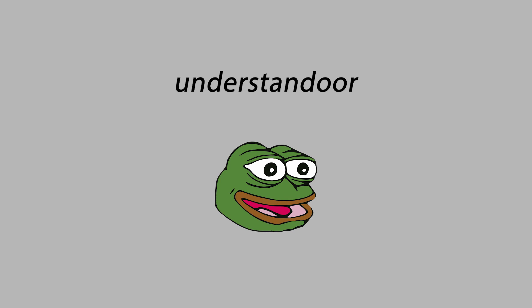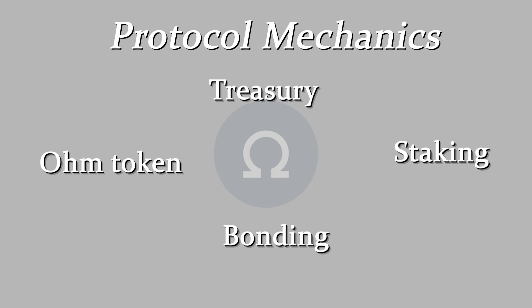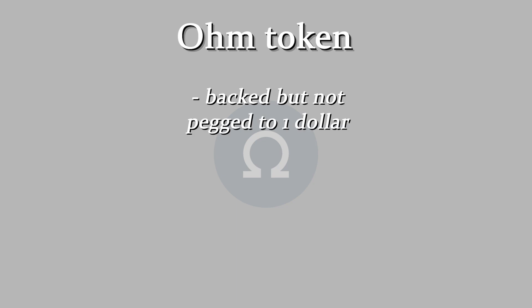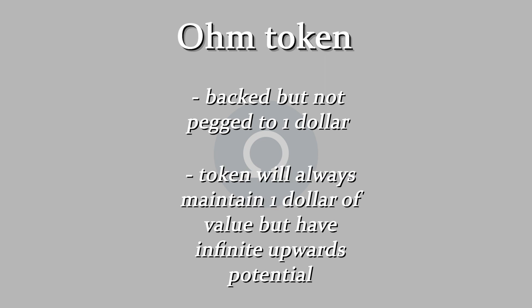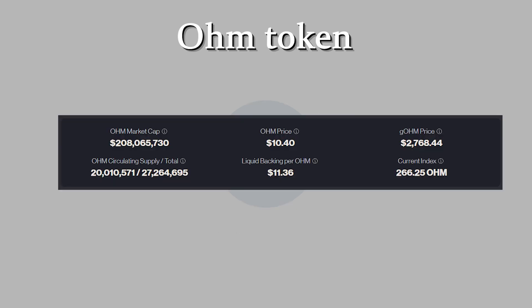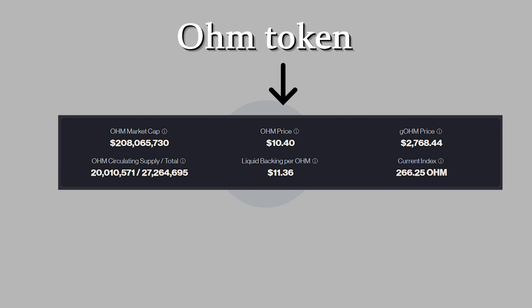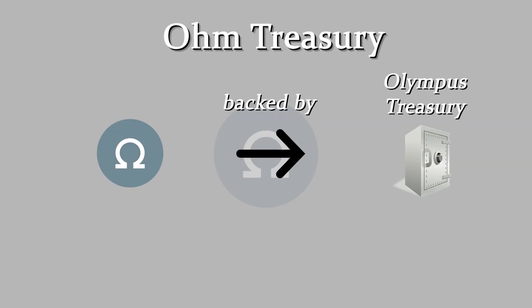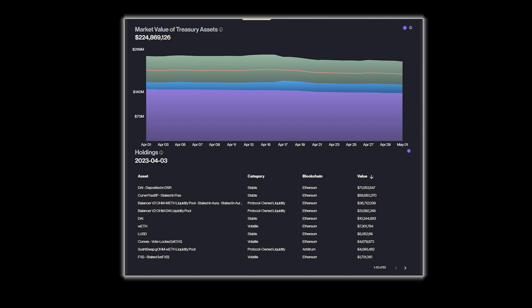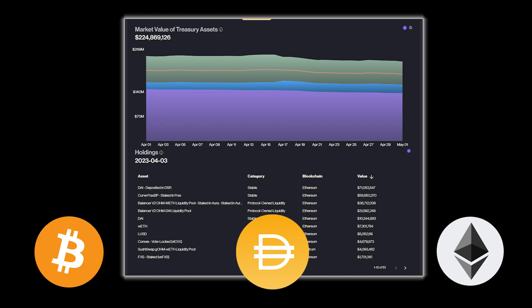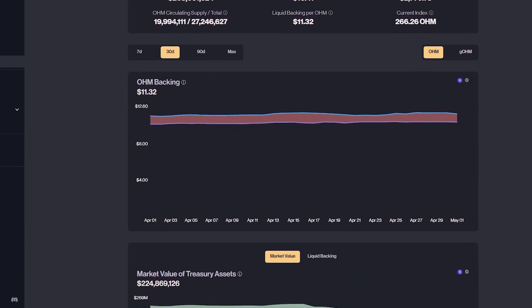Now that we've covered some important context, we can move on to the actual protocol mechanics. Each OHM token is backed but not pegged to one dollar. This allows the token to theoretically always maintain at least a one dollar value, but also have an infinite upside price potential. OHM currently has a total supply of 27,264,695 tokens and a circulating supply of 20,010,571 tokens. It has a current price of $10.40, but has a liquid backing of $11.36. The OHM token is backed by the Olympus DAO treasury, which is made up of an index of 54 different assets, including stablecoins as well as other major crypto assets like ETH and BTC. For a full list of these assets, you can check out the Olympus DAO dashboard, which is linked in the description.